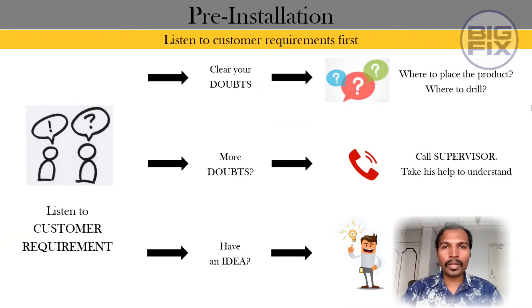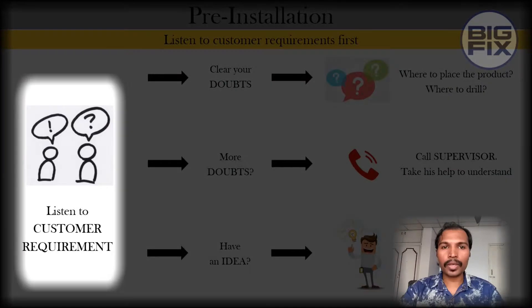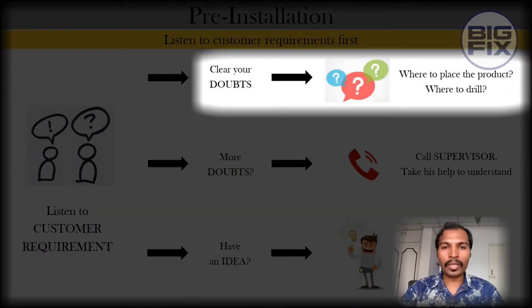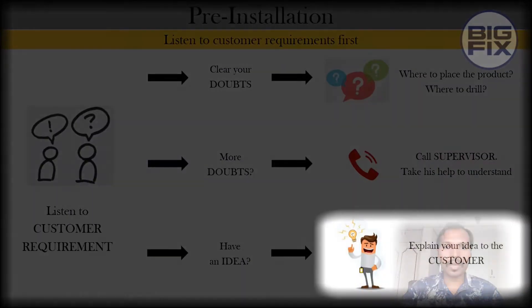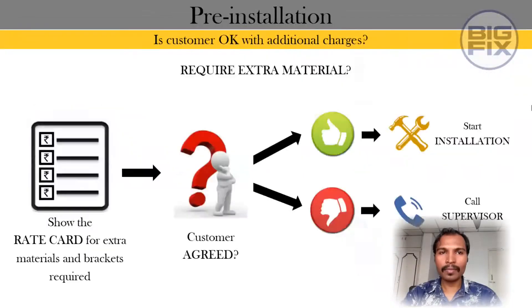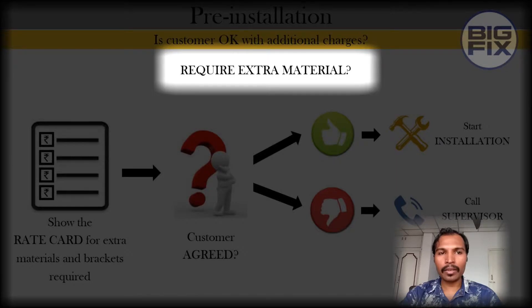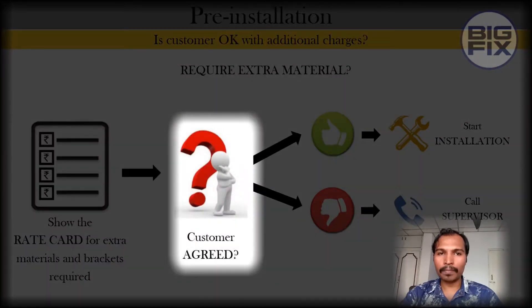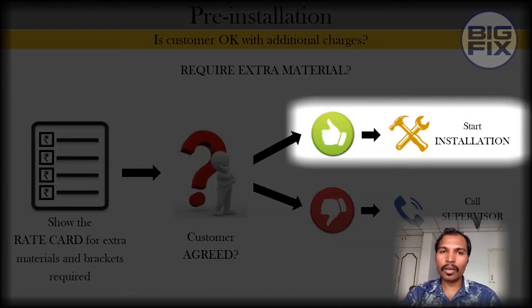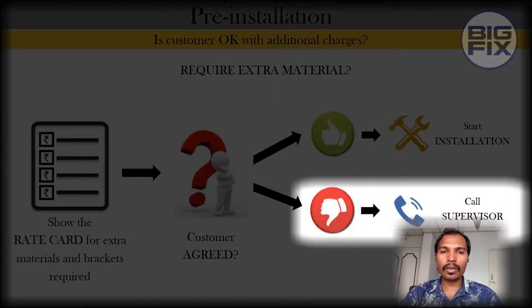Points to be noted during installation: First, listen to the customer's requirement. If you have any doubts, clear them. If you have further doubts, you can call your supervisor and discuss with him. If you have any ideas, share them with the customer. If the installation requires any extra material, show the rate card to the customer and discuss the charges. If he agrees, start the installation; if he disagrees, call the supervisor.